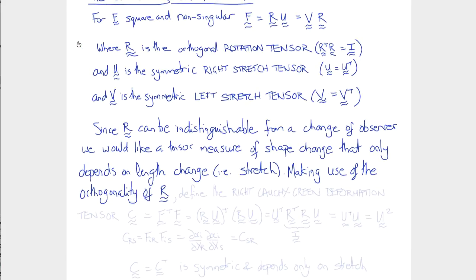So we define the right Cauchy-Green deformation tensor, which is conventionally called C, by C equals F transpose F. F transpose would be R U all transpose times R U.